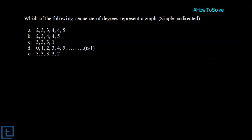Hello everyone, welcome back to tech2.com. Today we are starting a new category of video called 'How to Solve.' In this category we will be solving problems, focusing on the approach towards a problem. We have given a hashtag 'how to solve,' so please share this video by tagging it. The problem to start with is: which of the following sequences of degrees represent a graph? The graph we are considering is simple and undirected, and the options are as follows.